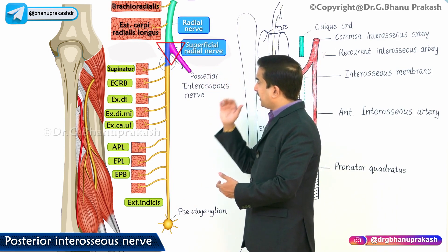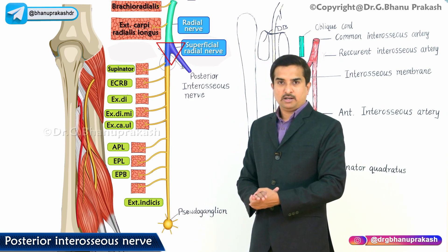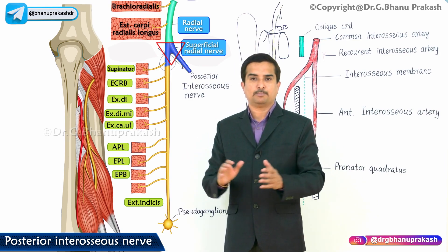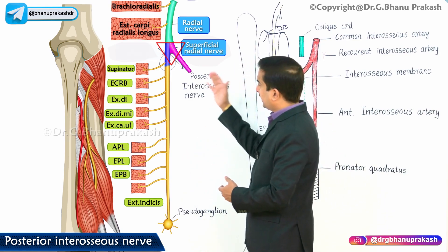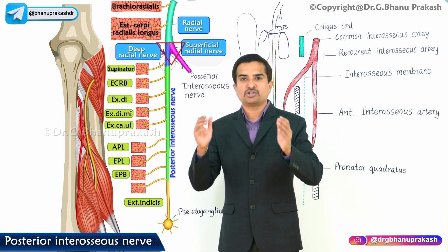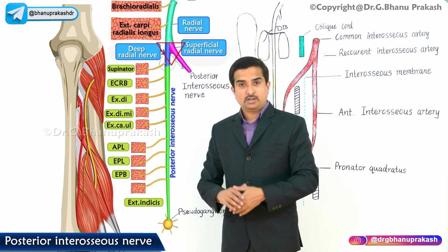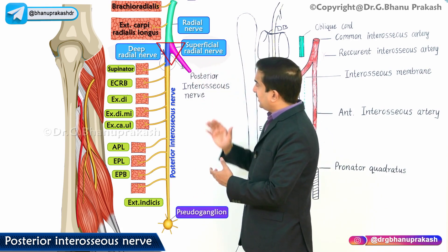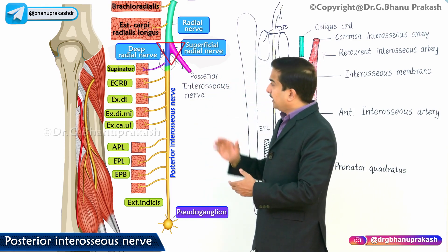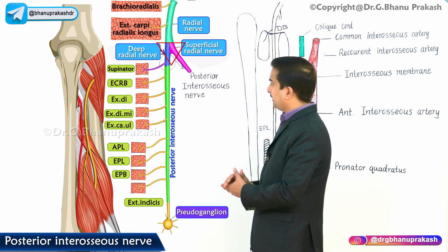One branch is the superficial branch of the radial nerve, which is absolutely a cutaneous branch — it is not motor in nature and does not give innervation to any muscles of the posterior compartment of the forearm. The other branch is called the deep branch. The deep branch continues as the posterior interosseous nerve after innervating and piercing the supinator muscle, meaning it gives off a small branch to the supinator in the cubital fossa.